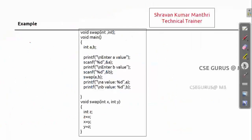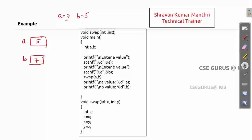Now let us observe this program. My intention is to give two values: A is 5 and B is 7. I want to write a program to swap two numbers, which means after swapping A should become 7 and B should become 5. So I have written this program. Let us see whether it works — enter A value which is 5, enter B value which is 7, then I call the function swap(a, b).